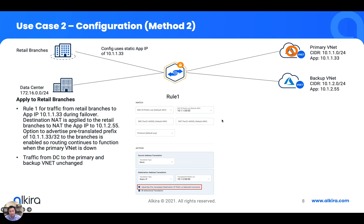Another method to address this is to apply the policy to all of the branches. This is fairly straightforward: apply a rule that says for any traffic from retail branches going to 10.1.1.33, NAT that traffic's destination IP to 10.1.2.55 when the primary VNet is down. Note that the flag 'advertise pre-translated destination IP prefix to select connector' is checked here. What this does is even if the primary VNet is down, Elkira will advertise 10.1.1.33 to all of the retail branches using BGP or IPsec. This is a complex scenario very elegantly addressed by Elkira's NAT policy.